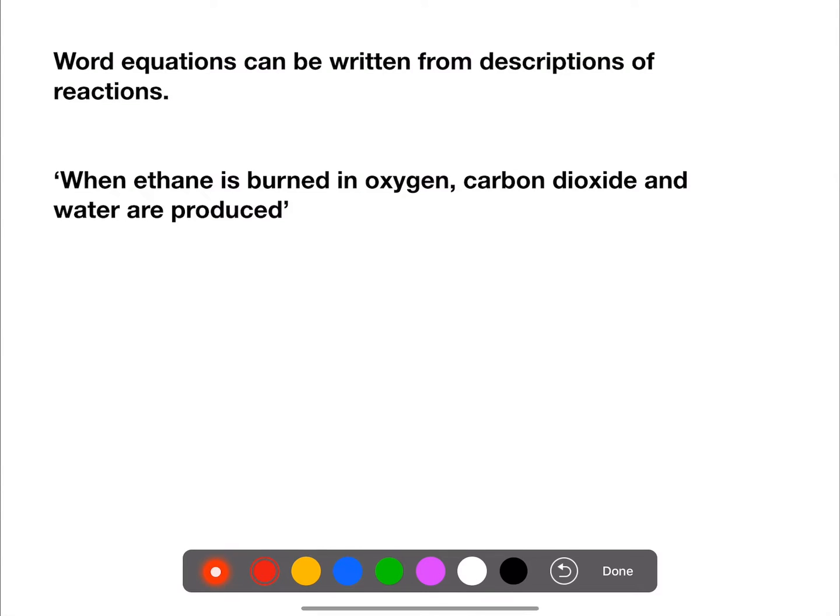Word equations need to be written from descriptions of reactions. So here we have a description of a reaction. When ethane is burned in oxygen, carbon dioxide and water are produced. So the first thing we need to do is identify the reactants and the products. The word produced tells us that the things just before it are the products. When ethane is burned in oxygen implies that they are the reactants.